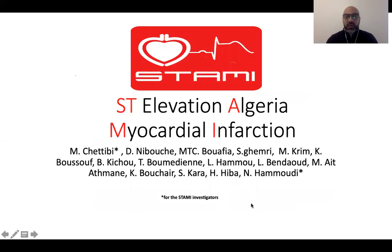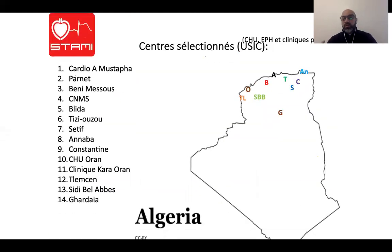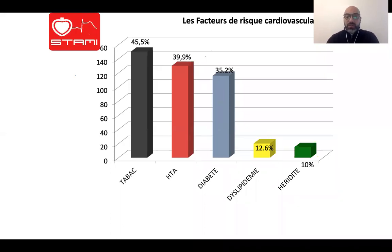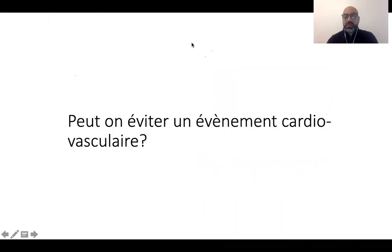Pour vous donner quelques chiffres en Algérie : dans le registre STAMI (ST Elevation Algeria AMI), on a analysé tous les patients sur un mois ayant fait un syndrome coronaire aigu ST+. Un patient sur deux était tabagique, 40% avaient de l'hypertension artérielle, 35% étaient diabétiques — et pour la plupart ne se savaient pas diabétiques ou hypertendus.